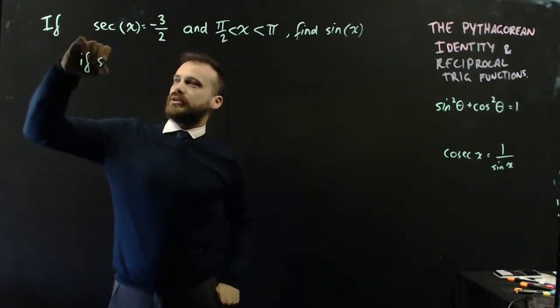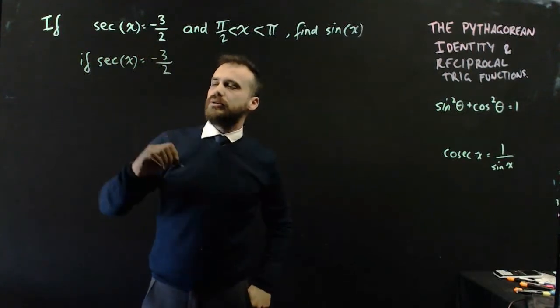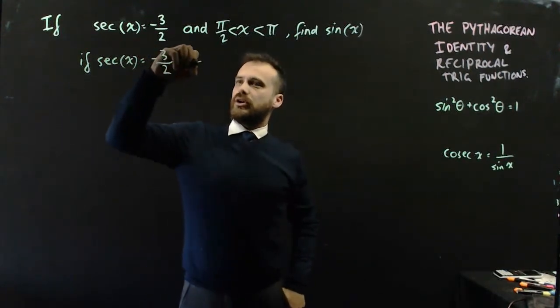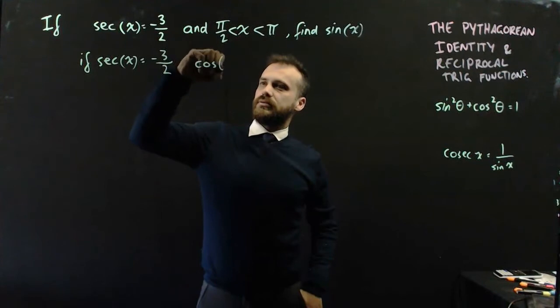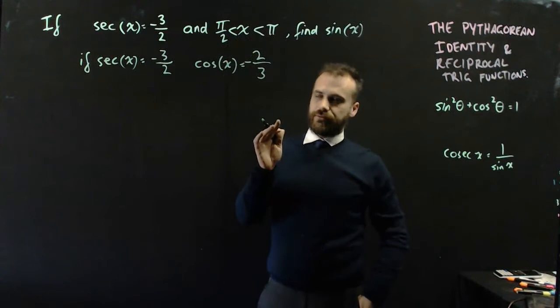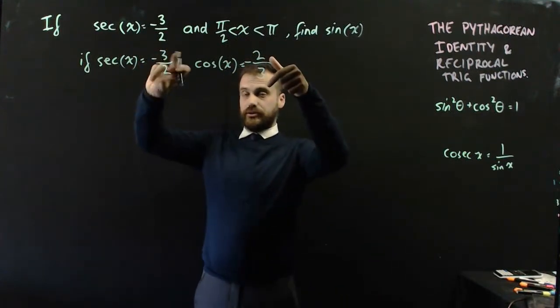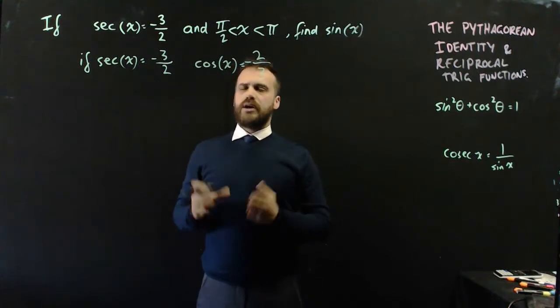So, first of all, if sec x equals negative 3 on 2, cos x equals 2 on 3, negative. That's because they're reciprocals. Okay, now what can we do?